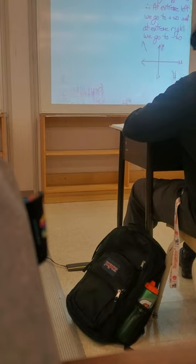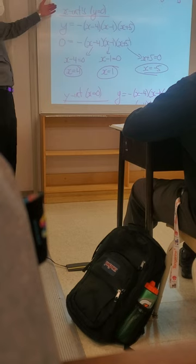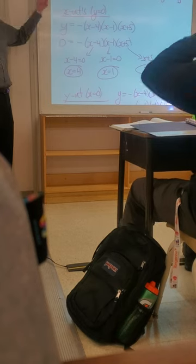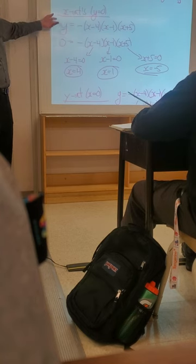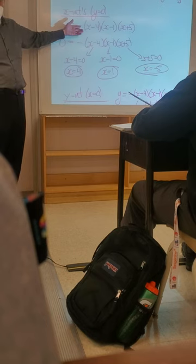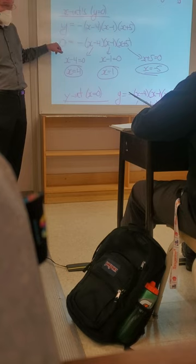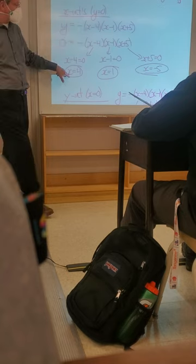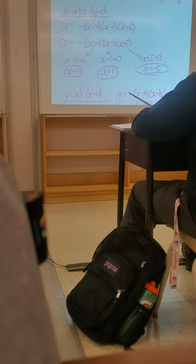What do we got to do next? We're going to take a look at the x-intercepts. With the x-intercepts, our y-value is equal to zero. This is why we need the equation in factored form — so we can easily figure out where the x-intercepts are going to occur, because any one of those factors, if it gives us zero, there's our x-intercept. So x minus 4 could be zero, x minus 1 could be zero, x plus 5 equals zero. We're going to end up with x-intercepts at 4, 1, and negative 5.